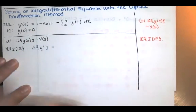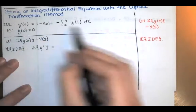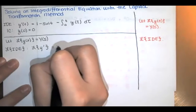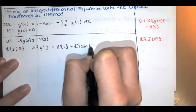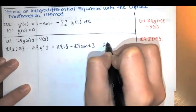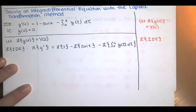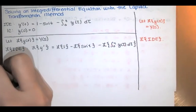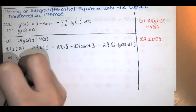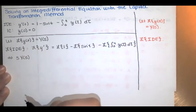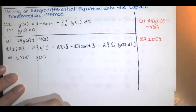The Laplace transform is a linear operator, so we can take the Laplace transformation term by term. Since this is a first derivative, we start with s to the first and multiply by the Laplace transform of little y, then subtract little y at zero to get the Laplace transform of that first derivative.